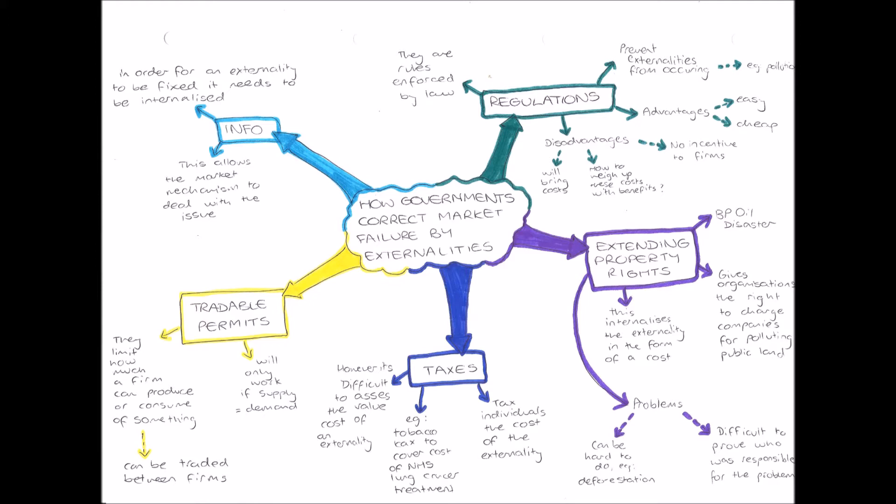This can be done in four different ways. Firstly, we have regulations. Regulations are rules enforced by law, and they aim to prevent externalities from occurring in the first place — so rather than correcting market failure, we are preventing it. The advantages of regulations are that they're quite easy and cheap to implement because they can go through Parliament quickly and be set up fairly easily.